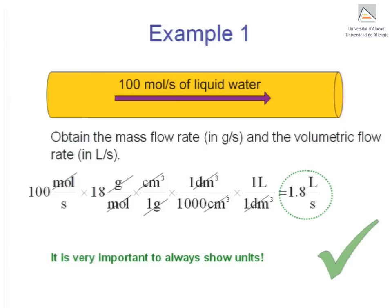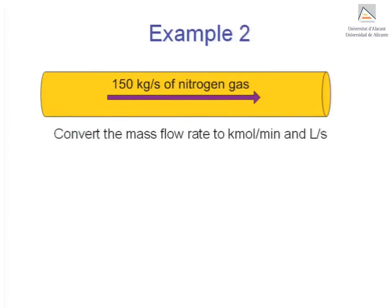Now let's look at another example. Example 2. We now have 150 grams a second of gaseous nitrogen flowing in a pipe. We need to express this mass flow rate in kilomoles a minute and in liters a second.